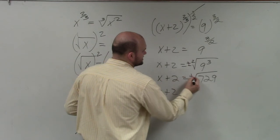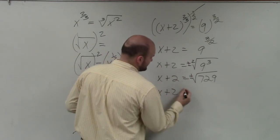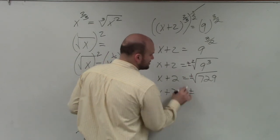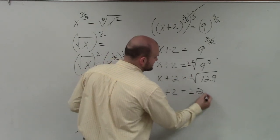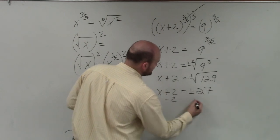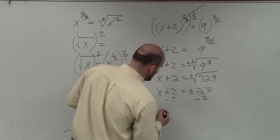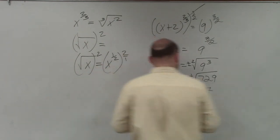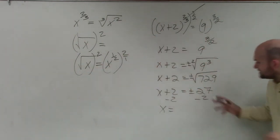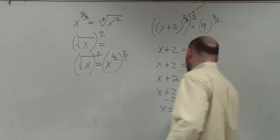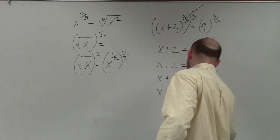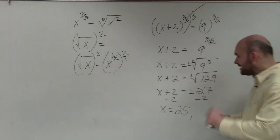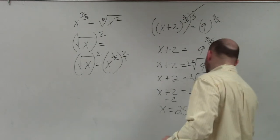Please remember, that's plus or minus — plus or minus 27. Then subtract 2 from both sides. x equals positive 27 minus 2, which is 25, and negative 27 minus 2, which is negative 29.